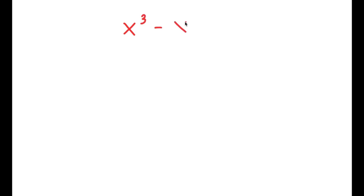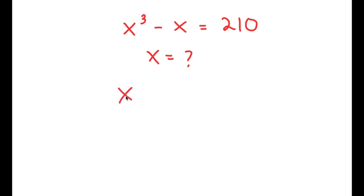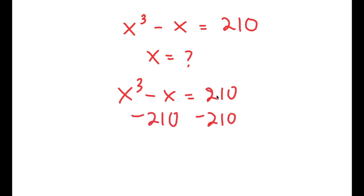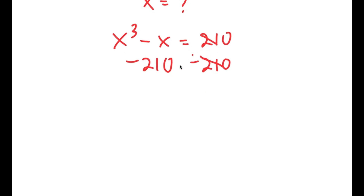In this video, I'm going to solve the equation x to the power of 3 minus x is equal to 210. To solve this, I want to find the value of x, so I'm going to first start by subtracting 210 on both sides. So now these two cancel out, and I get x to the power of 3 minus x minus 210 is equal to 0.